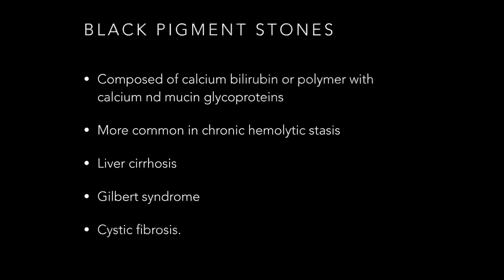We are going to talk about black type first. Black type pigment stones are composed of either pure calcium bilirubin or polymer-like structures with calcium and mucin glycoprotein. This type is more common in patients with chronic hemolytic states, which increases conjugated bilirubin in their bile — for example, in patients with liver cirrhosis, Gilbert syndrome, or cystic fibrosis.